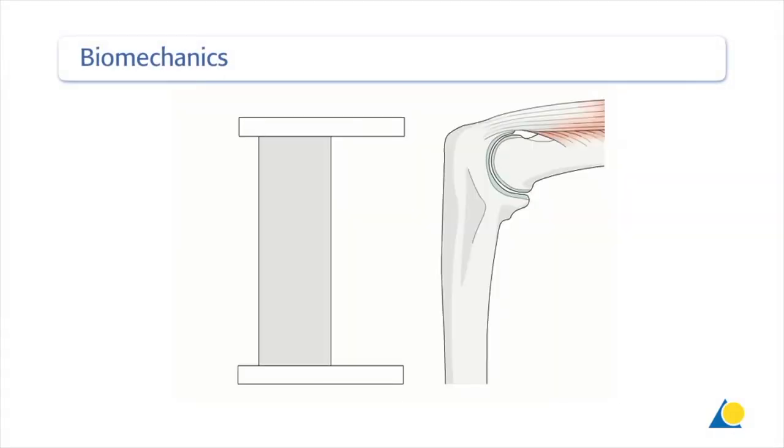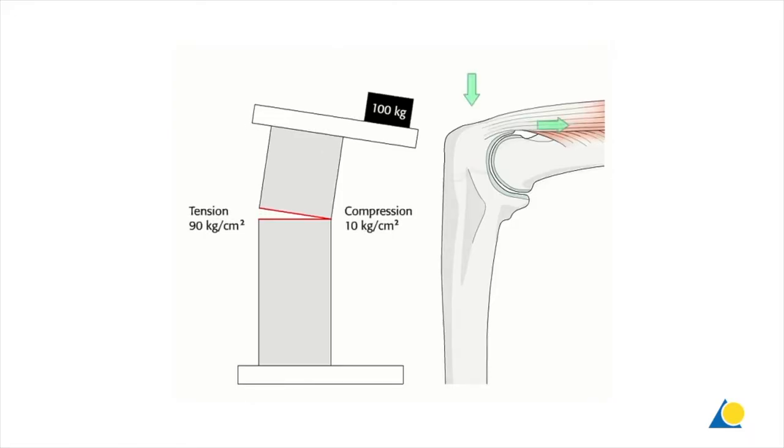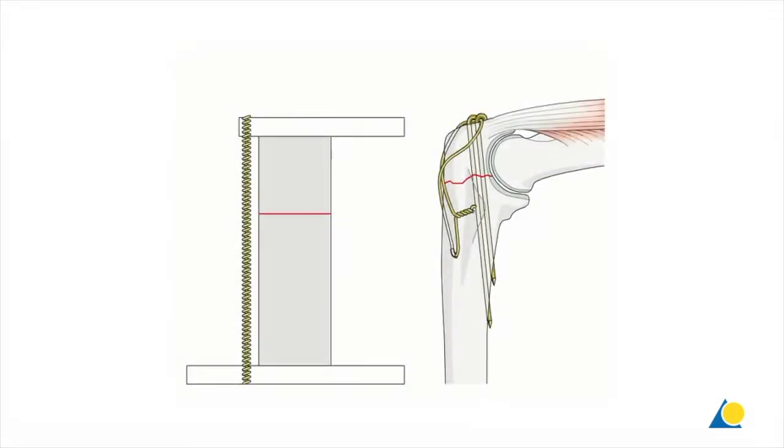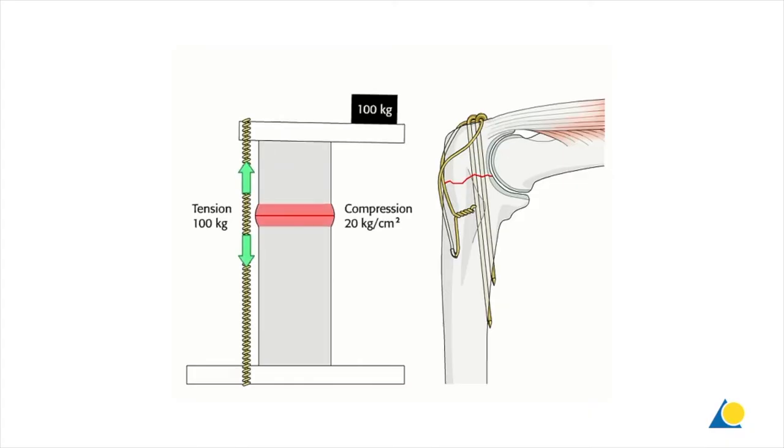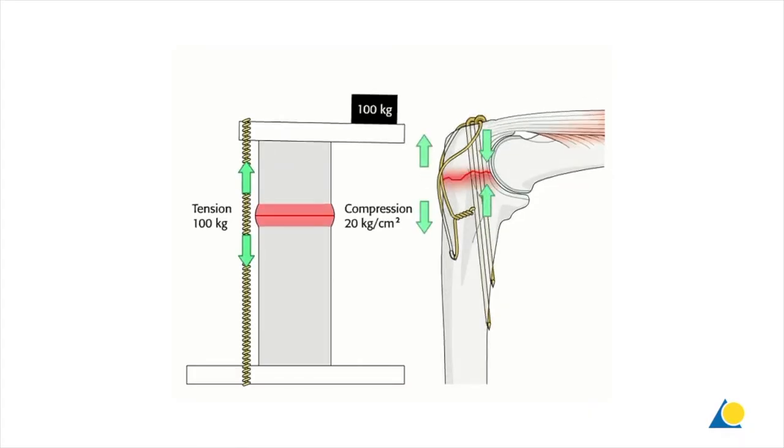The tension band principle was first described by Frederick Powells in 1927. He observed that when a curved bone is loaded, or a straight bone is eccentrically loaded, one side of the bone will be compressed and the other side distracted. If a device is applied eccentrically to the tension side of the bone, this tension band converts tensile forces into compression forces at the opposite cortex.